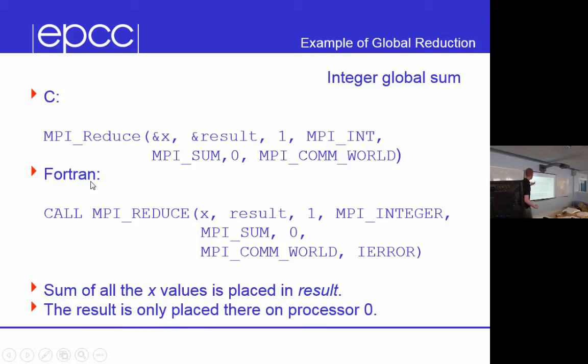And this is an example of an integer global sum on what it actually provides to the call. So your data on each process, the result to write to, which is significant on the root, in this case the root 0, the number of elements, which of type int, we're going to use the sum operator in the comm world.